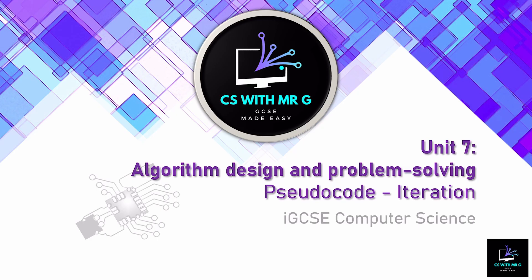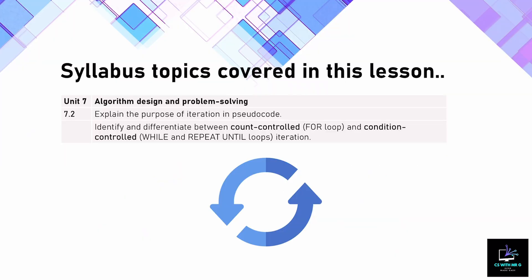Hello guys, welcome back to our pseudocode lessons. This is our third lesson looking at pseudocode. So far we've covered the basics including the layout, structure, and keywords. We've looked at assignment in terms of putting data inside a variable and conditional statements or if statements from the previous lesson. Today we're going to cover iteration, or better known as loops in programming. We need to understand when to use iteration in pseudocode and why we need to repeat instructions in an algorithm.